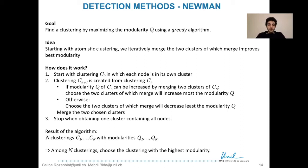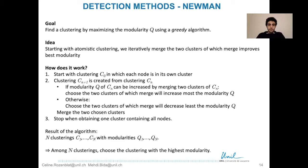We merge these two clusters, and at some point we reach a clustering with only one cluster containing all nodes. The result of this algorithm is n different clusterings obtained from the different steps, each with a modularity q1 to qn. Since modularity is a measure of the quality of the clustering, we choose the clustering with the highest modularity. This is the clustering that the Neumann method gives.